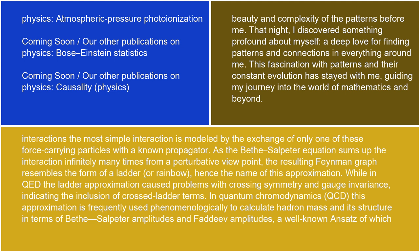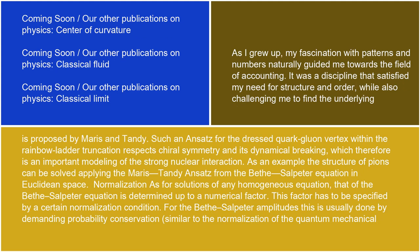While in QED the ladder approximation caused problems with crossing symmetry and gauge invariance, indicating the inclusion of cross-ladder terms, in quantum chromodynamics, QCD, this approximation is frequently used phenomenologically to calculate hadron mass and its structure in terms of Bethe-Salpeter amplitudes and Faddeev amplitudes. A well-known ansatz is proposed by Maris and Tandy. Such an ansatz for the dressed quark-gluon vertex within the rainbow-ladder truncation respects chiral symmetry and its dynamical breaking, which therefore is an important modeling of the strong nuclear interaction. As an example, the structure of pions can be solved applying the Maris-Tandy ansatz from the Bethe-Salpeter equation in Euclidean space.